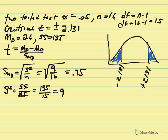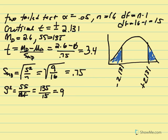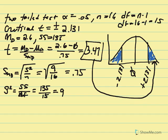Now we can replace variables: mean difference of 2.6 minus 0, divided by 0.75. In our calculators, 2.6 divided by 0.75 gives us a t statistic equal to 3.47. This positive value resides in our critical region, therefore we reject the null.